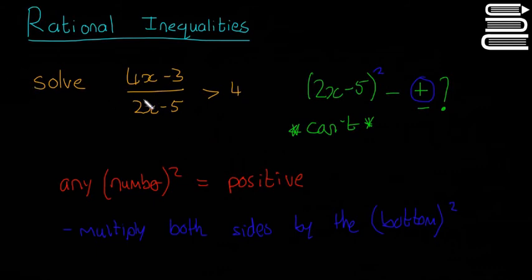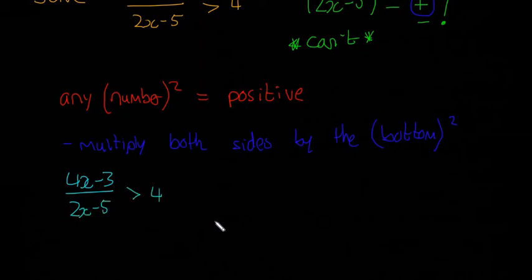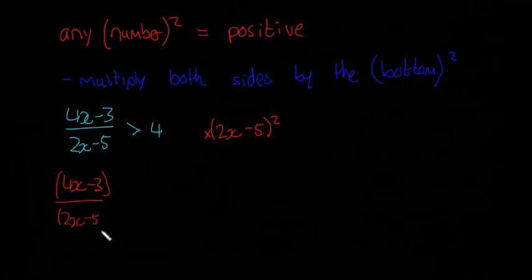So 4x minus 3 over 2x minus 5 greater than 4. So what we're going to do is we're going to multiply both sides by the bottom squared. So it's going to be 2x minus 5 squared. So 4x minus 3 over 2x minus 5 multiplied by 2x minus 5 squared, and this is going to be greater than 4 multiplied by 2x minus 5 squared. Just like a normal equation, we just multiply the same thing on both sides.